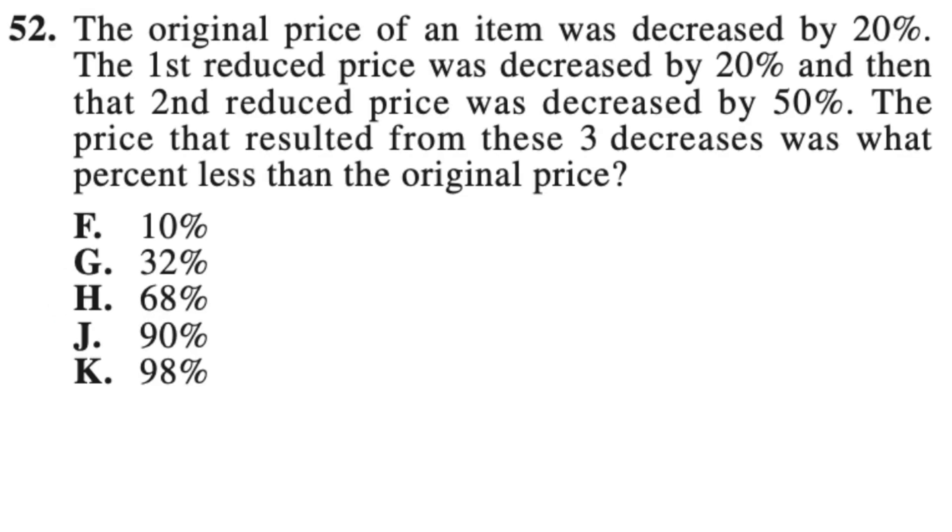Alright, let's take a look at this problem. The original price of an item was decreased by 20%. The first reduced price was decreased by 20%, and then that second reduced price was decreased by 50%. The price that resulted from these three decreases was what percent less than the original price. So simple, right? 20 plus 20 plus 50 is 90, so the answer is J. But that's wrong.